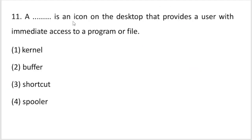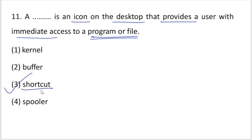A dash is an icon on the desktop that provides a user with immediate access to a program or file. On the desktop, if you want immediate access to a program or file, you create a shortcut. For example, for Microsoft Word or Microsoft Office, you create a shortcut on the desktop so you can quickly open the application. That is called a shortcut.